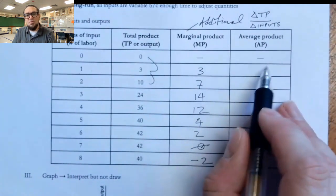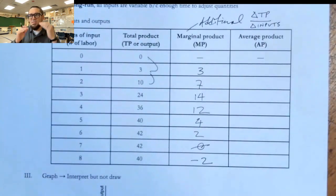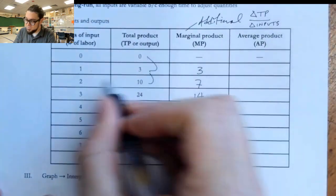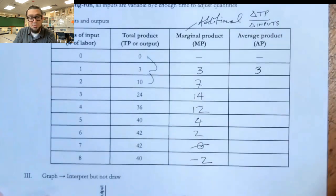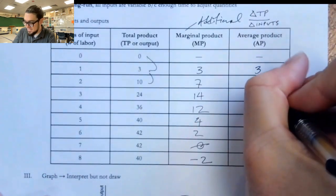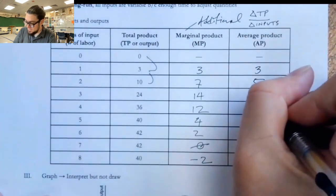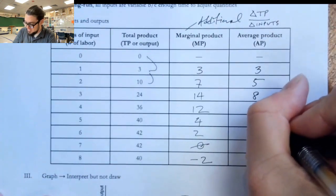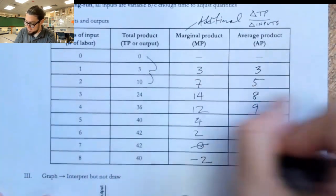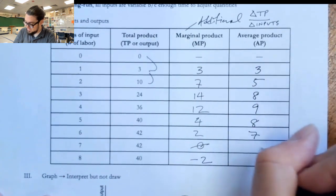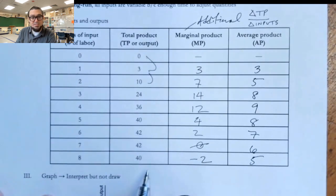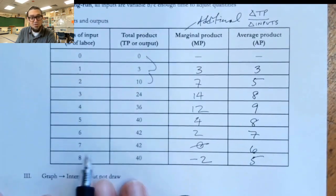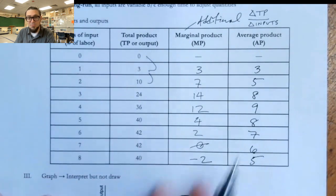We can also calculate a value called the average product. This allows us to determine the average number of units that these workers are generating. So for the first worker, it's just three over one. The second worker, 10 over 2 is 5. 24 over 3 is 8. And then 8, 7, 6, and 5. I'm just dividing this 40 over 8, 42 over 7, 42 over 6, and so forth.